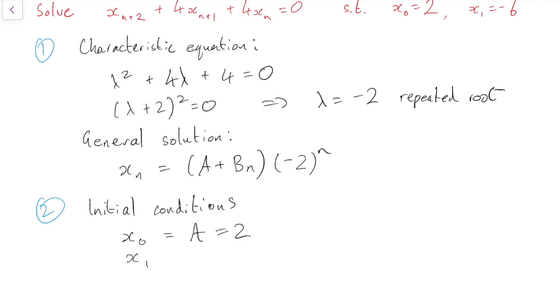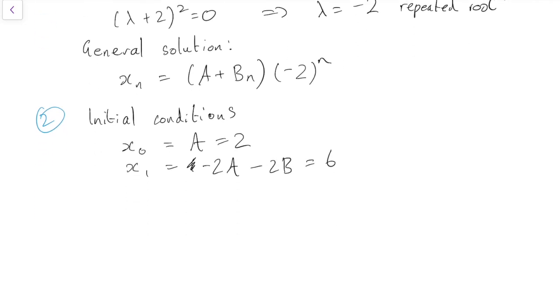And the condition x_1 equals 6 gives us -2A minus 2B equals 6. But we already know that A equals 2, so that must mean that B equals 1.